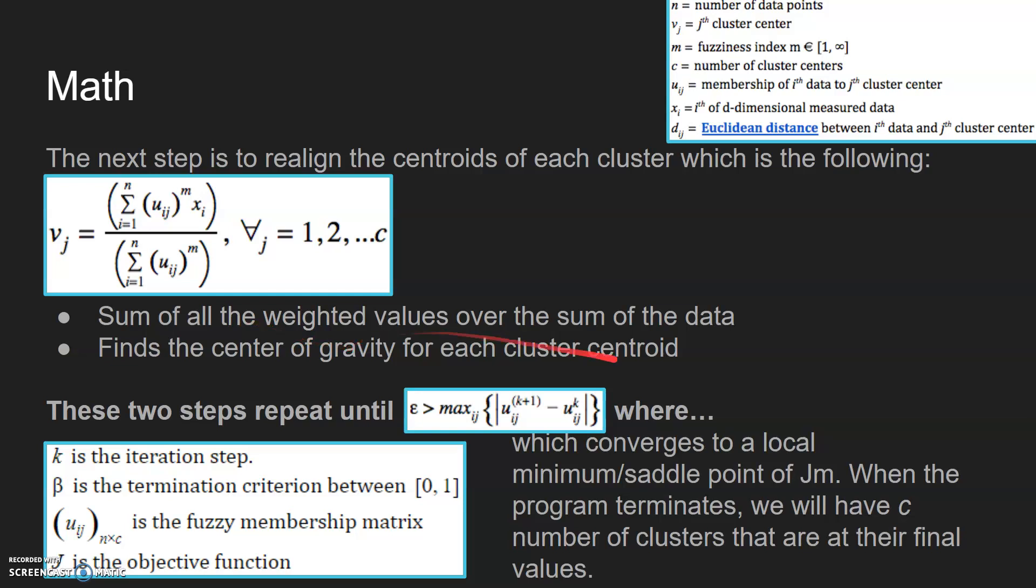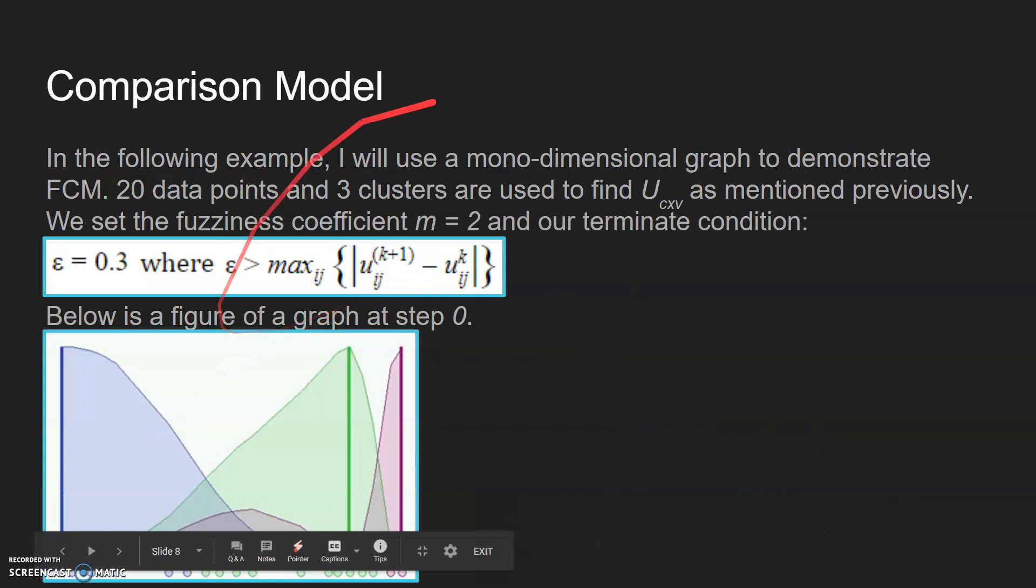Jm is the objective function, which converges to a local minimum or saddle point of Jm. When the program terminates, we will have C number of clusters that are at their final values.